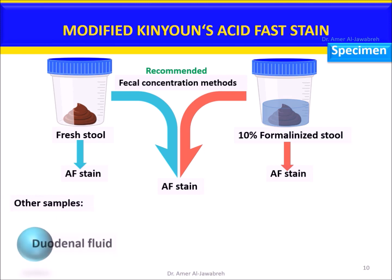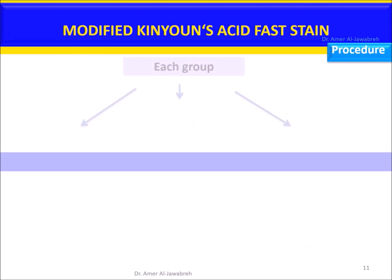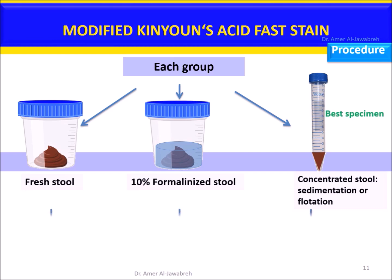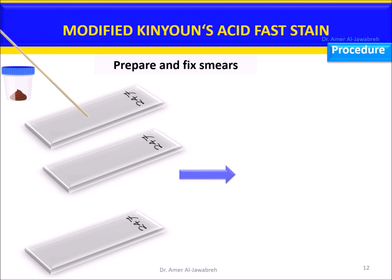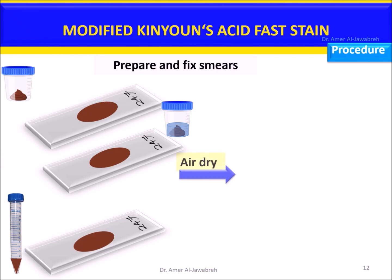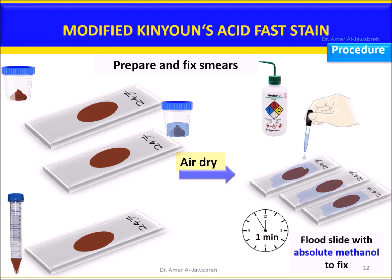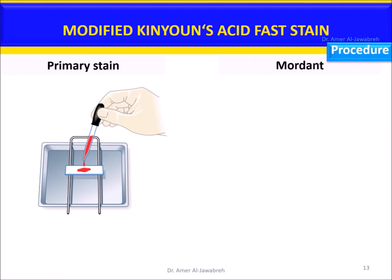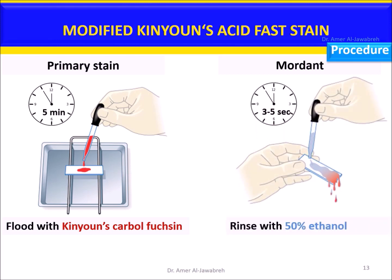Other samples include duodenal fluid, bile, sputum, and bronchial wash. Procedure: provide students with specimen — fresh stool, 10% formalized stool, and concentrated stool. Prepare fecal smears from each specimen. Air dry, then flood with absolute methanol for one minute to fix. Flood with Kinyoun's carbol fuchsin for five minutes, then rinse with 50% ethanol for five seconds.